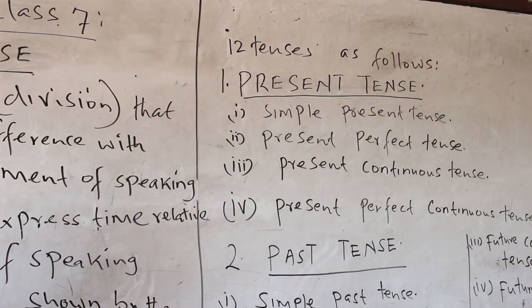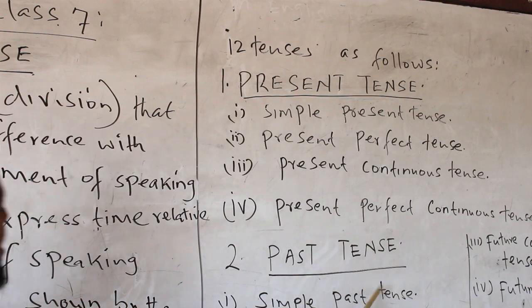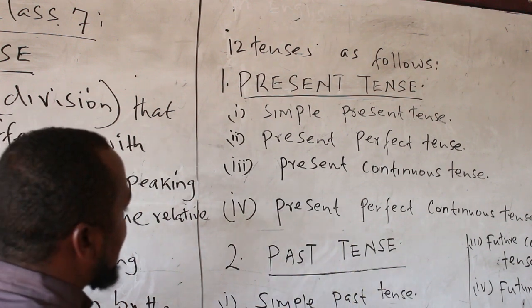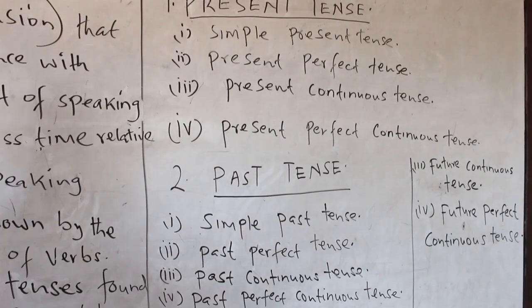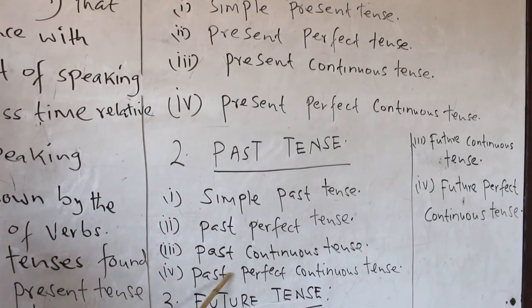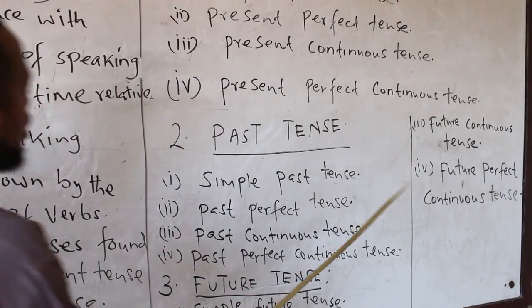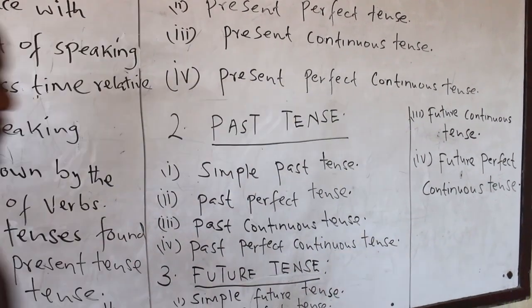Number two, past tense. Past tense is also divided into simple past tense, past perfect tense, past continuous tense, and past perfect continuous tense.